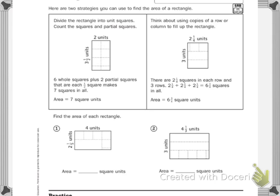So if we're looking at your homework, two of the strategies you can use to find area of a rectangle. It says divide the rectangle into unit squares, count the squares and partial squares.